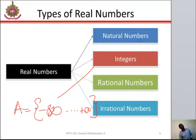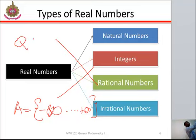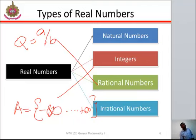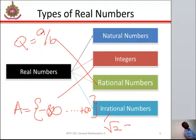Then the next one is a rational number. A rational number can be expressed as a ratio of two integers — you can say Q equals integer A over integer B. And the last type is an irrational number. These are numbers that cannot be expressed as a fraction. For example, the square root of 2 — this cannot be expressed as A over B.